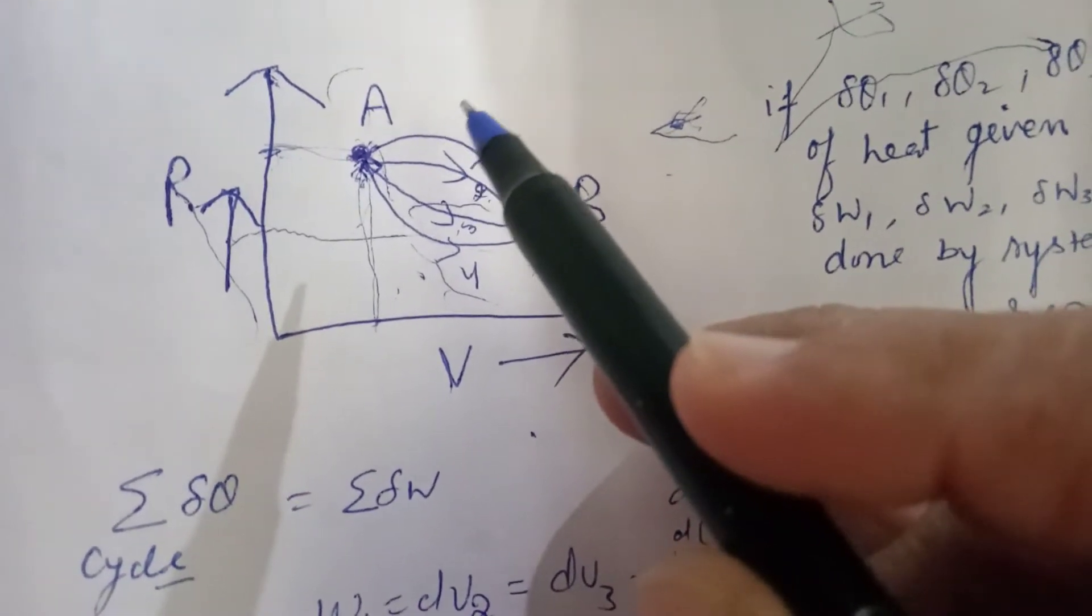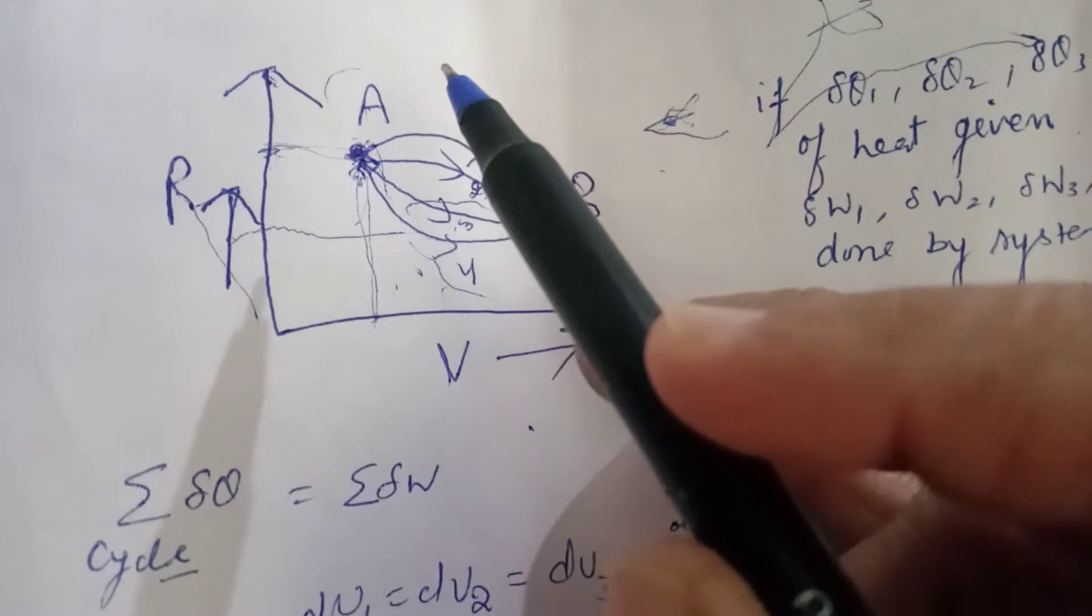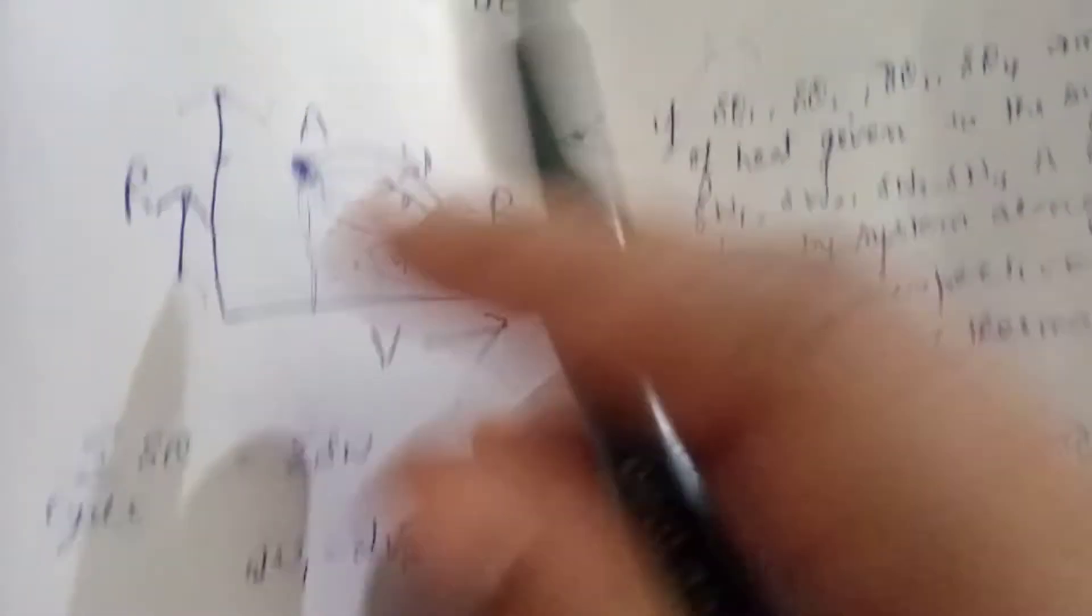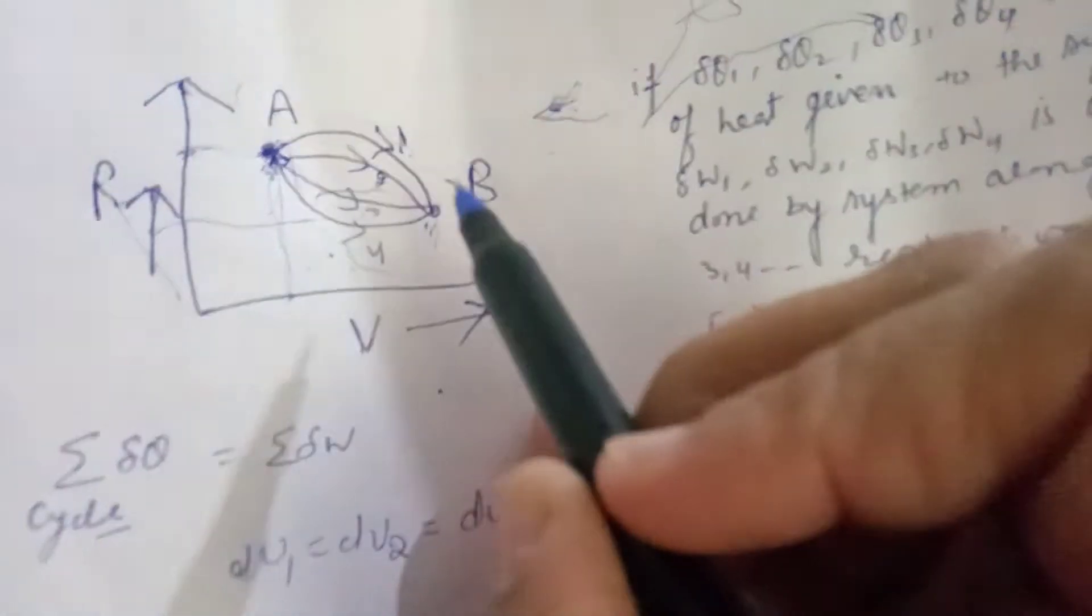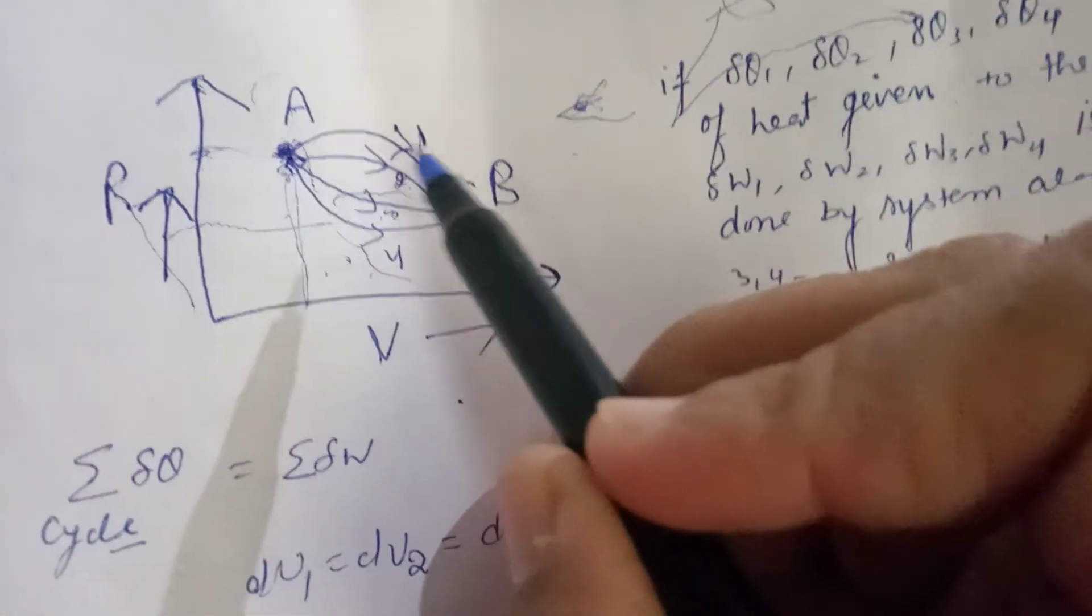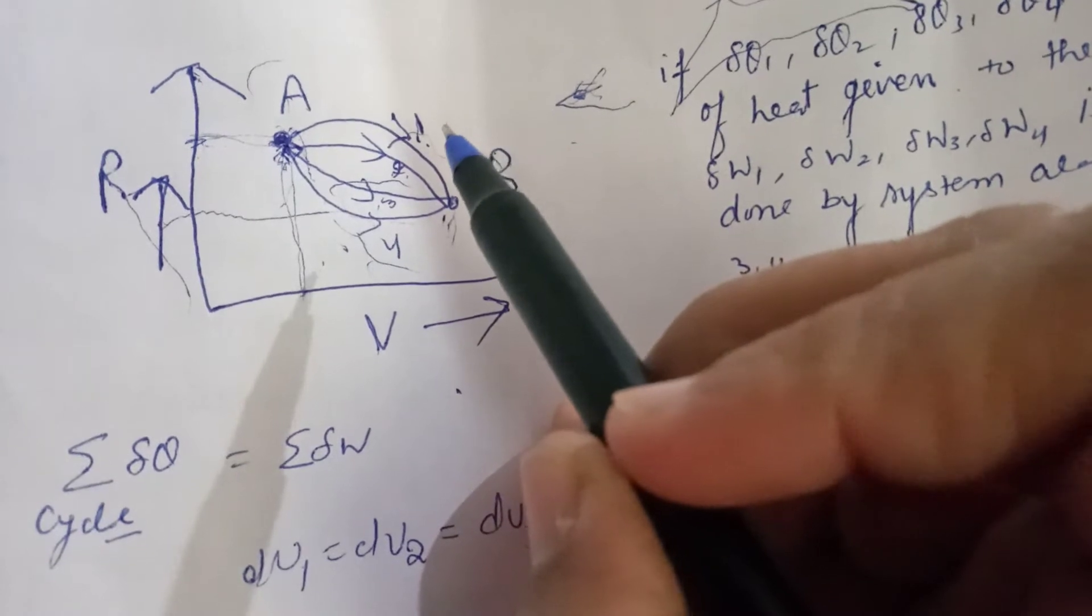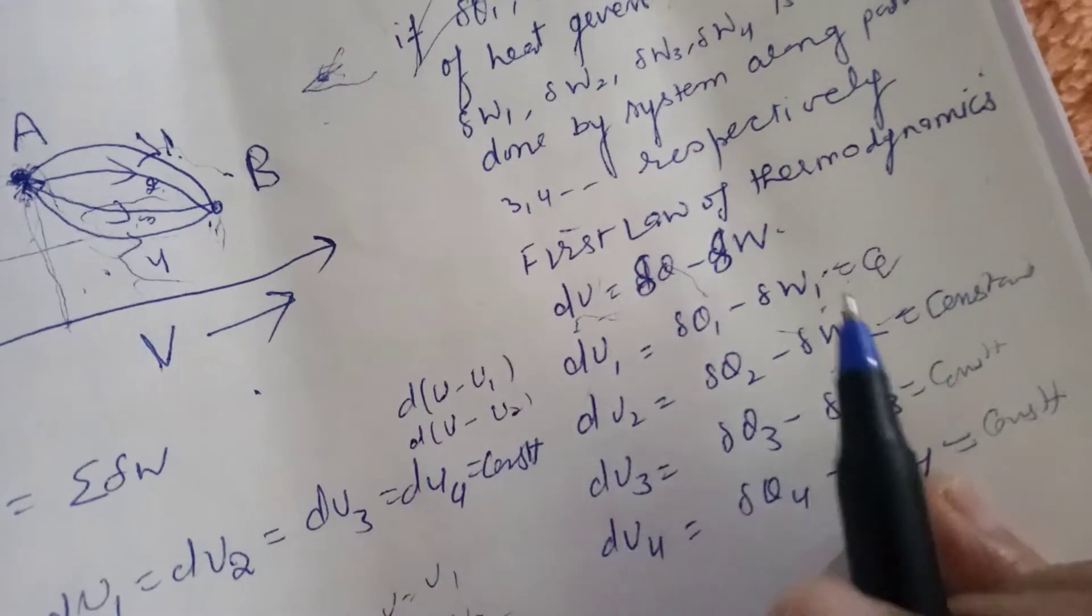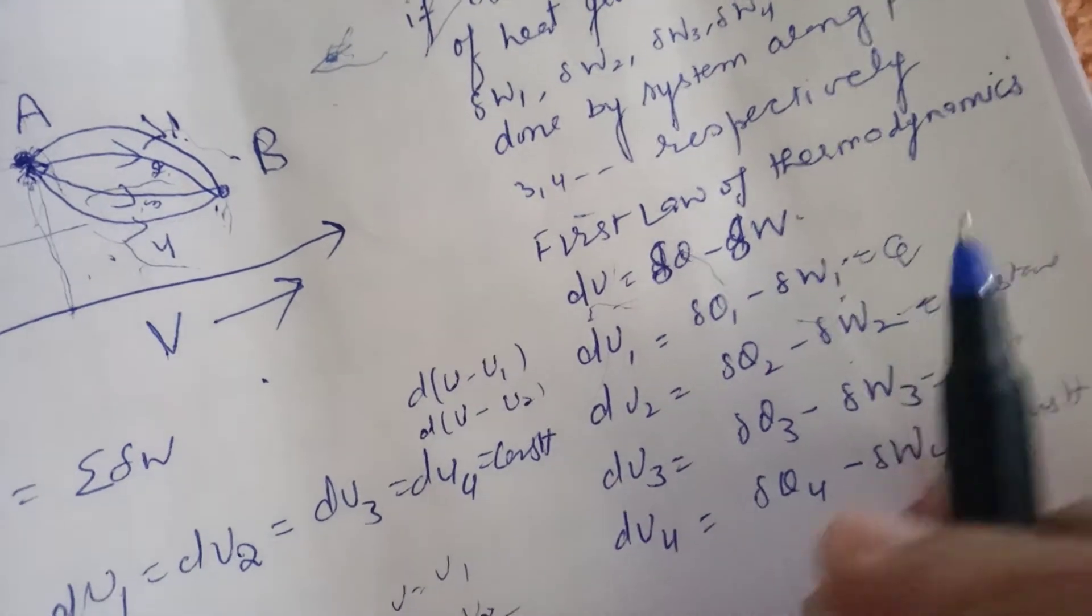to the thermal system and DW1 is the work done on the system from A to B via path 1, then we find that DQ1 minus DW1 is constant.